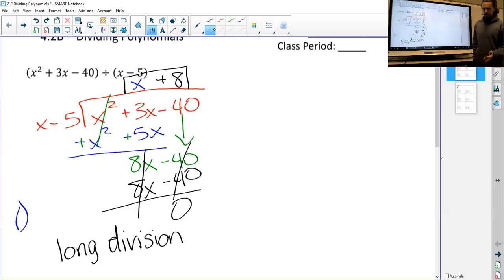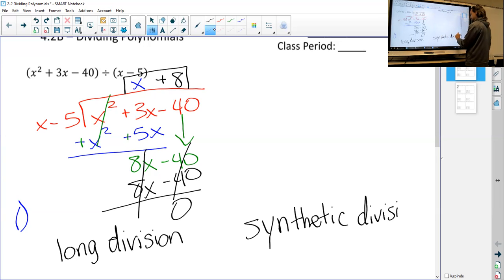That will always work, it's just kind of a lot of writing. So there's another way we can do this—looks totally different but does essentially the same work. It's called synthetic division. Here's what we do step by step: instead of making a regular division house, we're going to make it upside down.